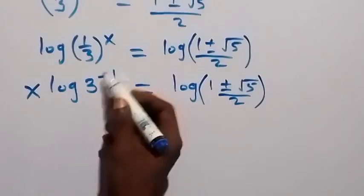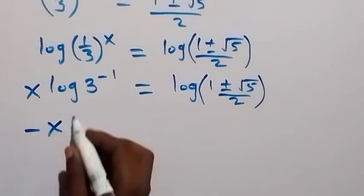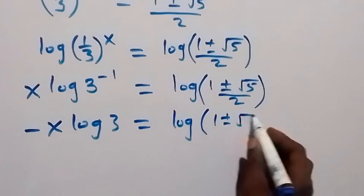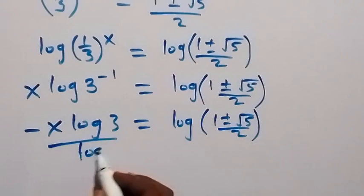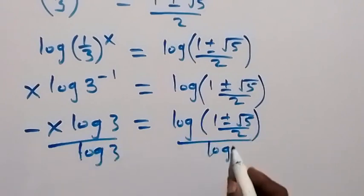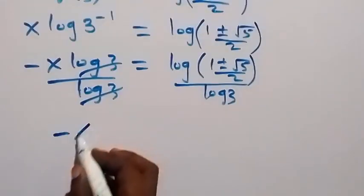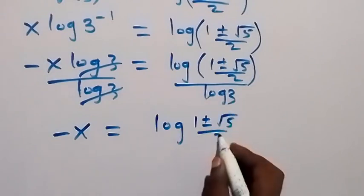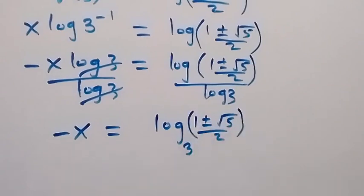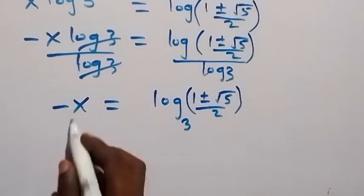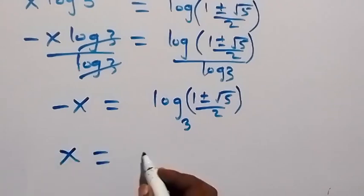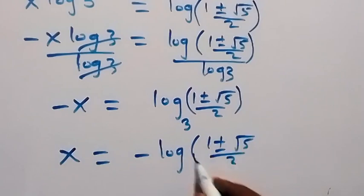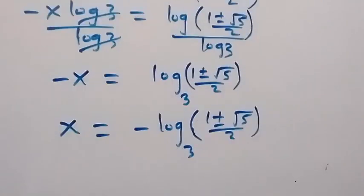Bringing the minus sign forward, we have −x · log 3 equals log((1 ± √5) / 2). Dividing both sides by log 3, using change of base, gives −x equals log base 3 of ((1 ± √5) / 2). Multiplying through by −1, we get x equals −log base 3 of ((1 ± √5) / 2). That is the solution.